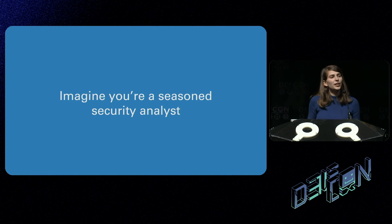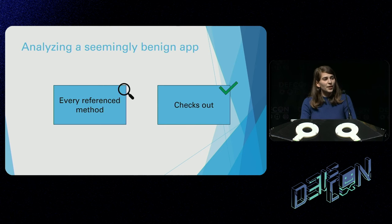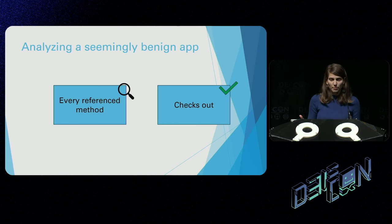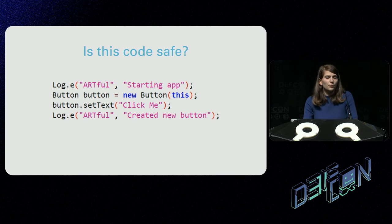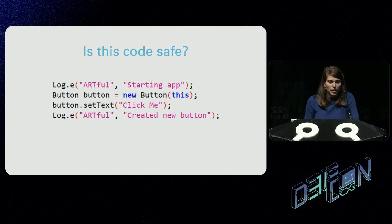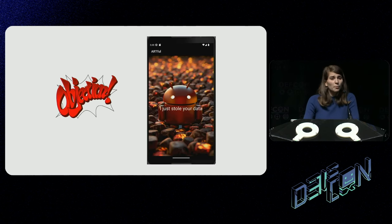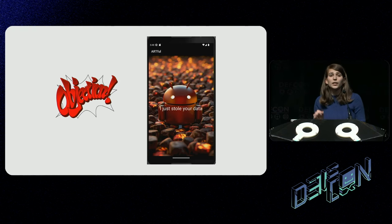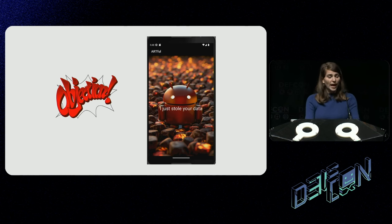Now imagine you're a seasoned security analyst and you're analyzing an Android application. You've checked every single method inside this application and it's all looking clean — no malicious indicators. So you're about to call it and say this application is indeed clean. And then you get to this part of the code. This looks entirely benign: we have a log.e method, an official Android framework method used to log an error to the console, and it looks like it's setting a button on the screen. You might think this code is perfectly safe. But this code has actually been dynamically modified and hooked during runtime, so every time the official log.e method is invoked, it's actually executing an underlying info stealer inside of custom code. So this actually just stole your data.